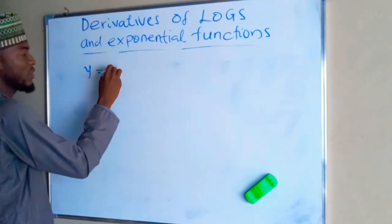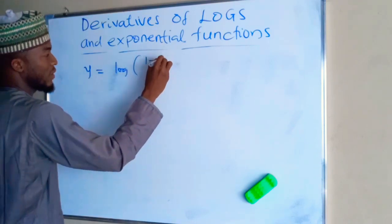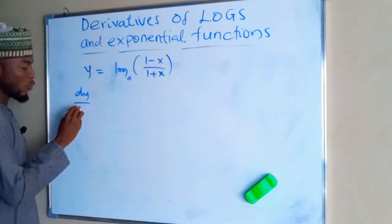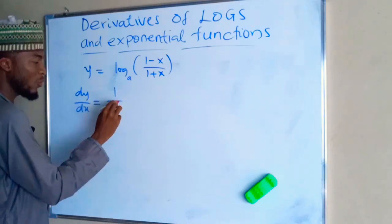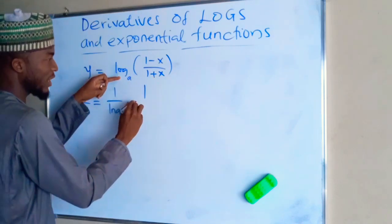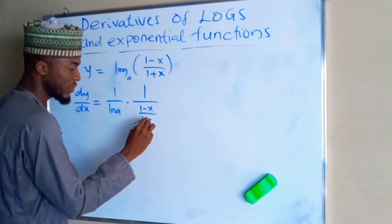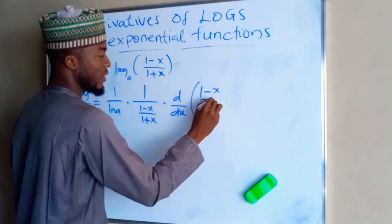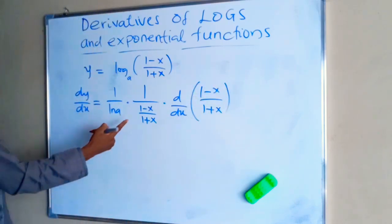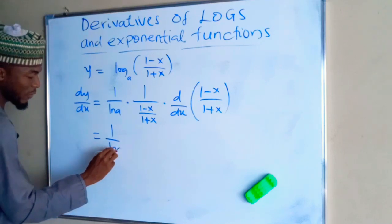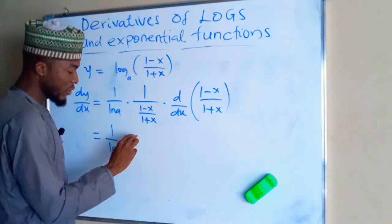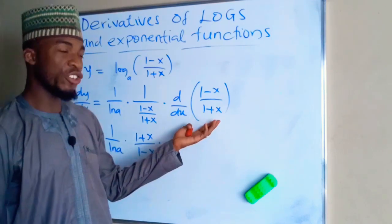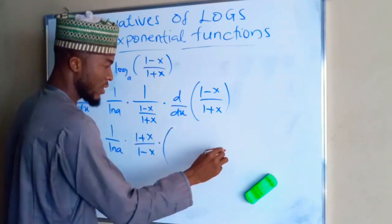For y equals log base a of (1 minus x) divided by (1 plus x), dy over dx will be equal to 1 over natural log of a, times 1 over the function (1 minus x)/(1 plus x), times the derivative of the whole function (1 minus x)/(1 plus x). This is the same thing as 1 over natural log of a times the reciprocal, which is (1 plus x)/(1 minus x), times the derivative. Applying the quotient rule here, let me leave a space for that.